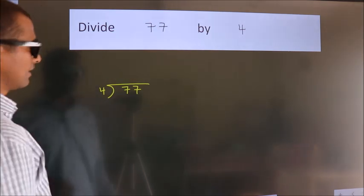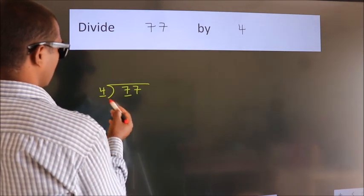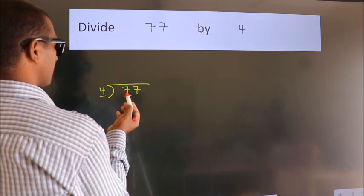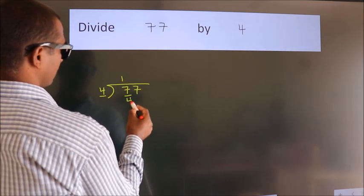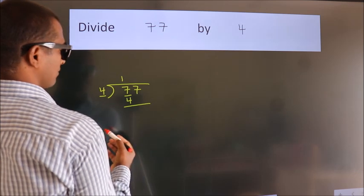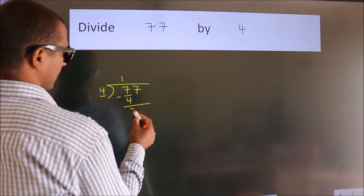Next, here we have 7, here 4. A number close to 7 in the 4 table is 4 ones, which is 4. Now we subtract and get 3.